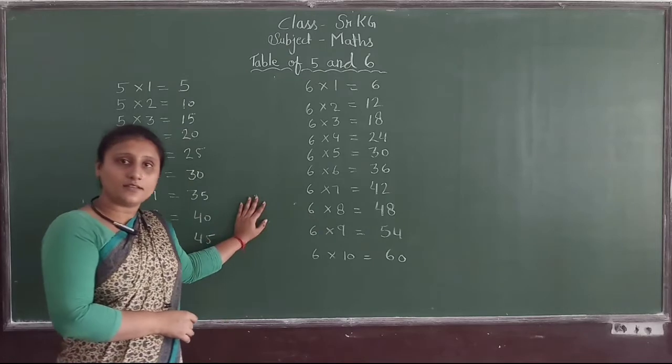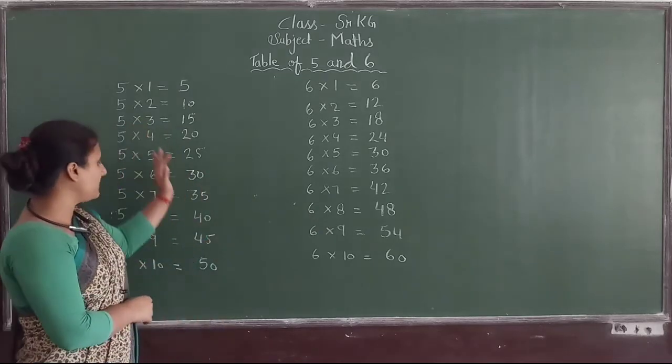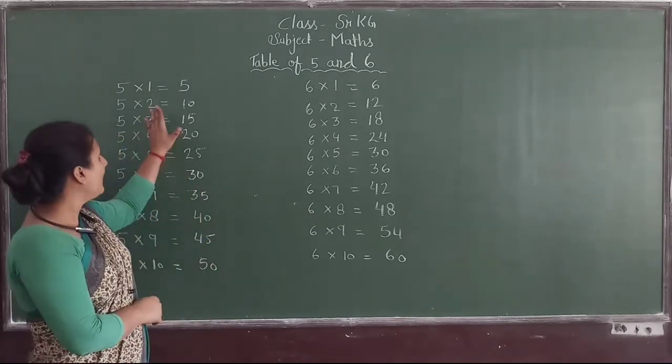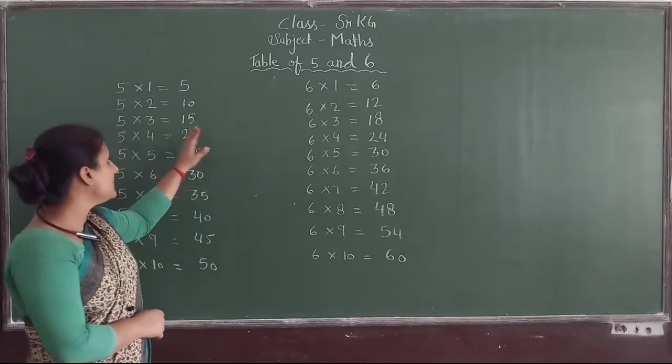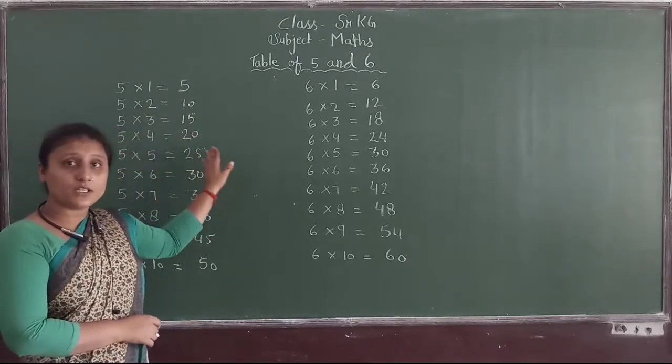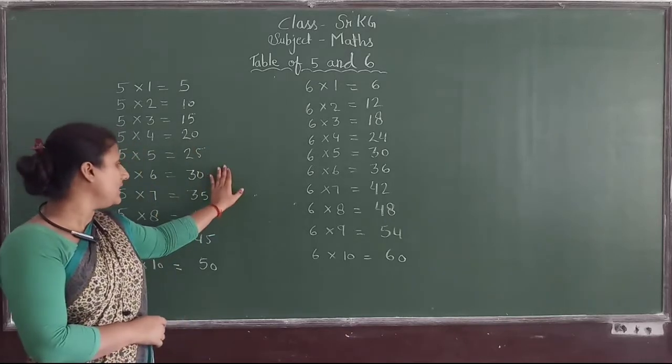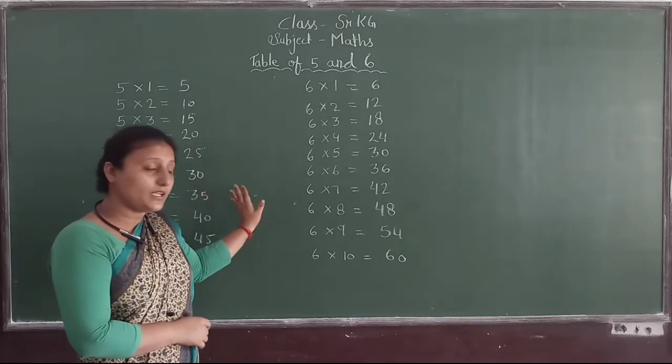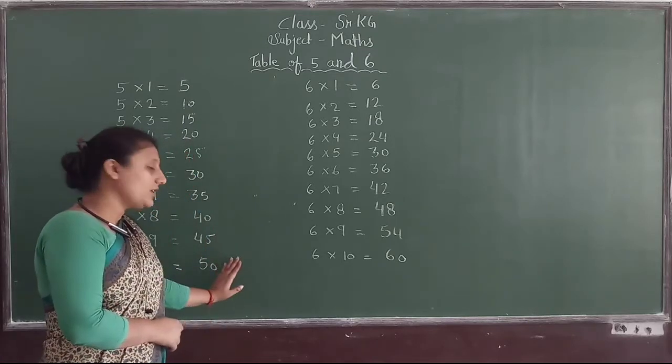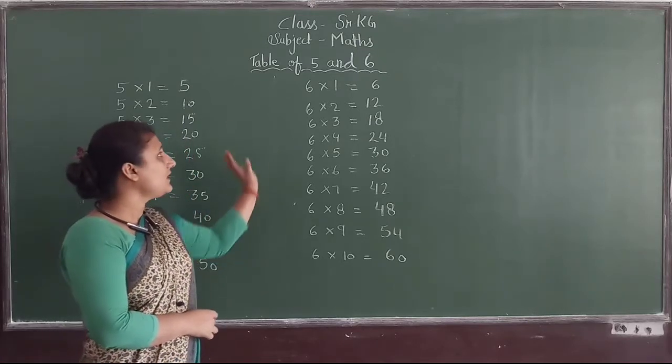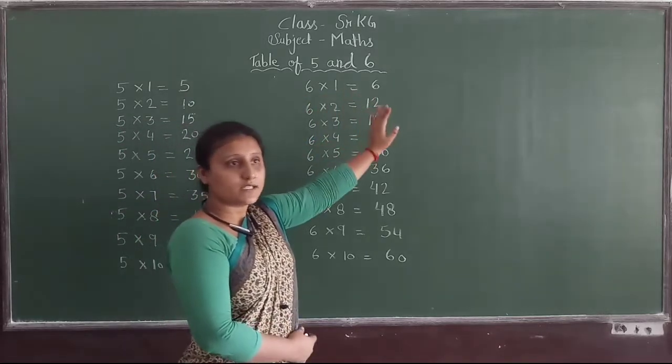So we will study. 5×1=5, 5×2=10, 5×3=15, 5×4=20, 5×5=25, 5×6=30, 5×7=35, 5×8=40, 5×9=45, 5×10=50. Next, 6×1=6.